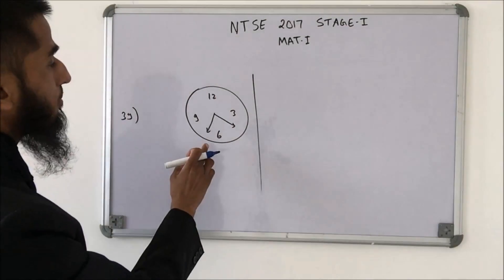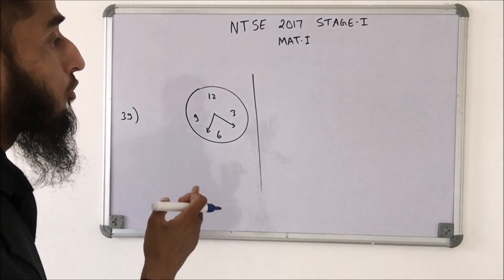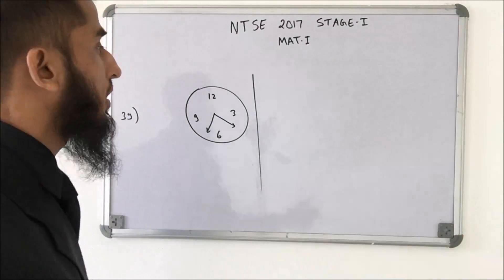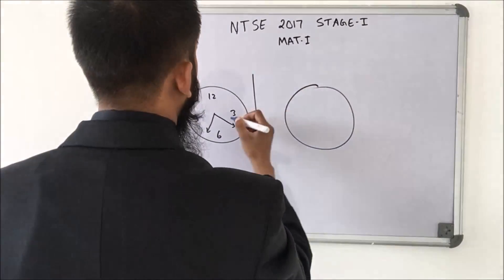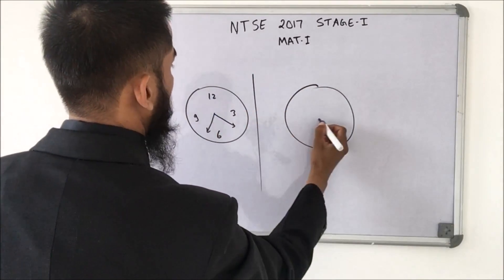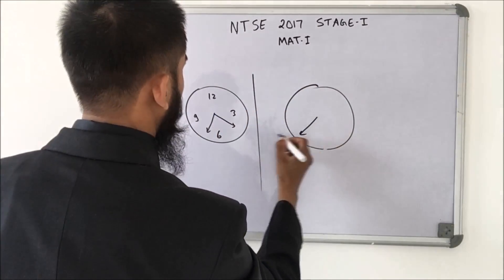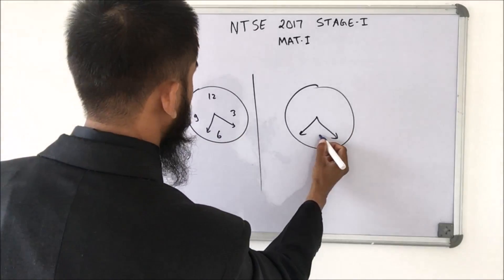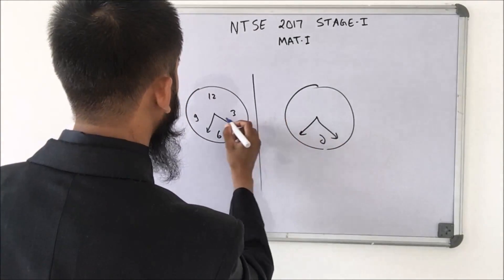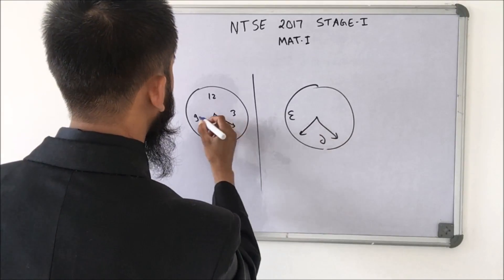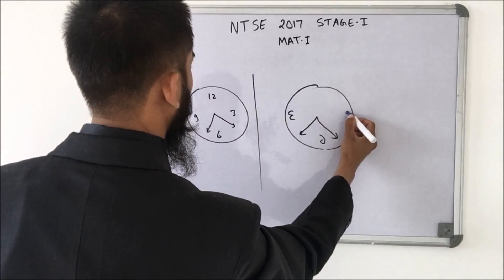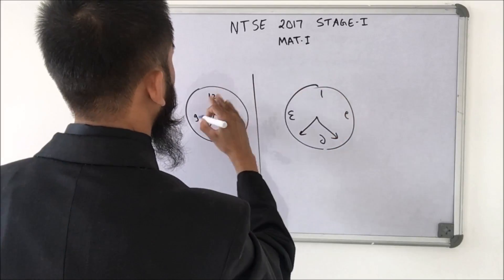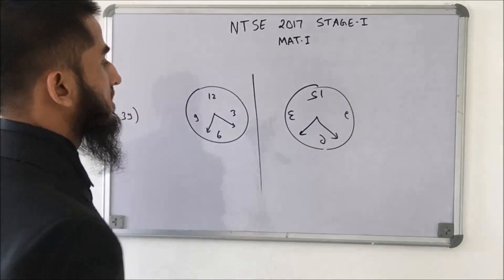Here we need to find the mirror image. Instead of looking at the options for confusion, it is better to create your own mirror image. Draw a circle with arrows mirrored, then mirror the 6, then mirror the 3 accordingly. Build the full mirror image yourself and then match it to the correct option.